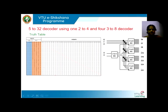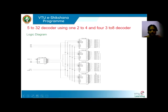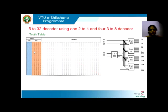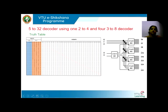Looking at the truth table for the 5-to-32 decoder: the enable inputs remain the same. Looking at the two MSBs — from 0 to 7 they are 00; from 8 to 15 they are 01; from 16 to 23 they are 10; from 24 to 31 they are 11. So the two MSBs take four values: 00, 01, 10, 11. To select 4 different outputs, we need a 2-to-4 decoder as the selector circuit.